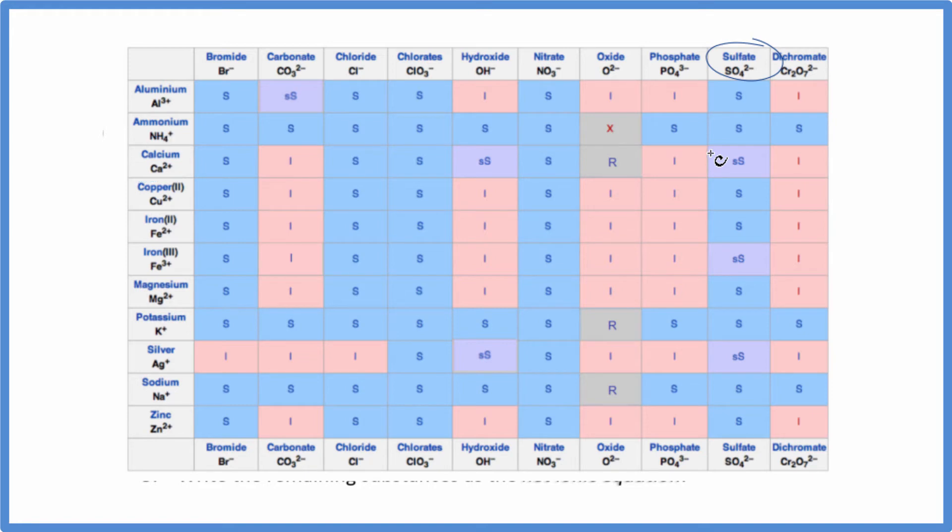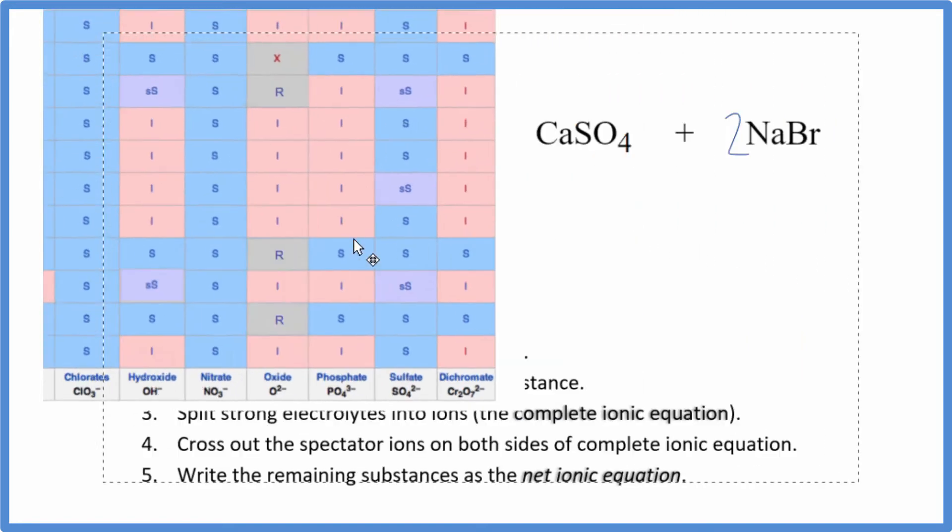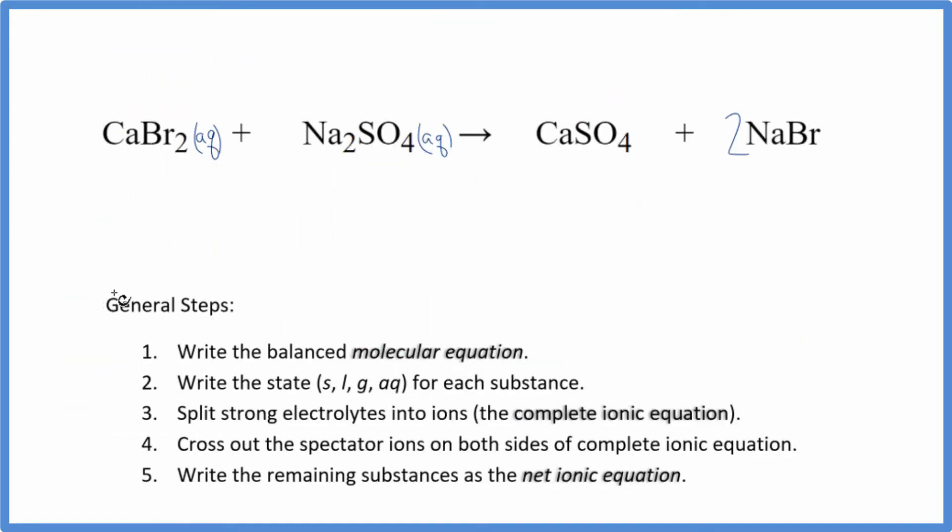When we're dealing with net ionic equations, we treat slightly soluble as being a solid. So we just put an S after it here. In fact, when these two substances react, this falls to the bottom as a precipitate. Some of it stays dissolved, but not much. Most of it's going to be falling to the bottom of your test tube. We have Na, another sodium compound, very soluble. So we know the states for each substance.